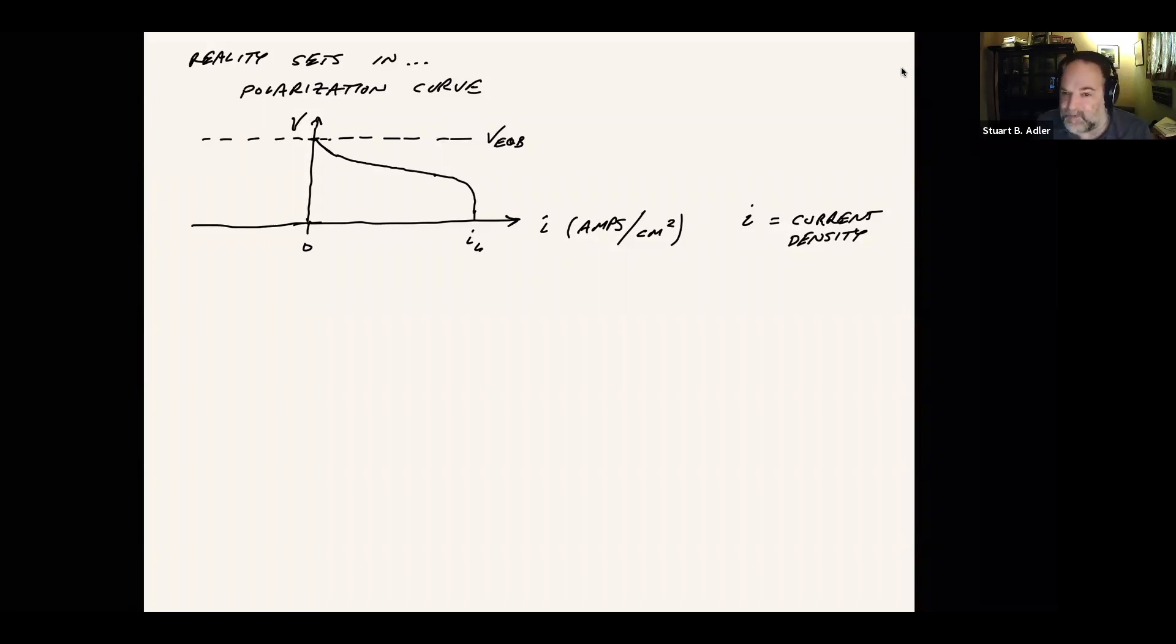And then typically what we'll do is we'll operate the cell somewhere in between those two limits at a place that is optimized for efficiency or power density or whatever other things we're trying to engineer this system to do. So like here, we said this was 1.03 volts in our example. Maybe we would operate somewhere around 0.7 volts and get a finite current density that we can measure. And an SOFC, this would be typically around some fraction of an amp per square centimeter. Something like this.